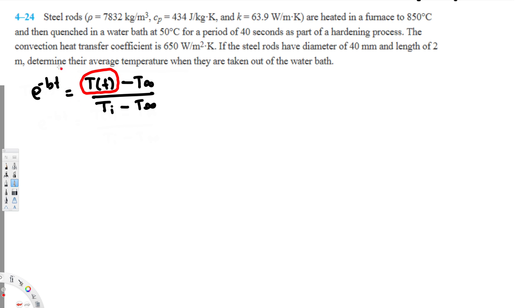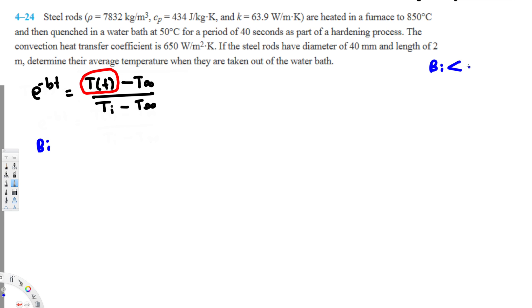To confirm this is a lumped system, we check the Biot number and verify whether it is less than 0.1. The Biot number should be less than 0.1 for lumped system analysis to be applicable. Let's go ahead and check it.